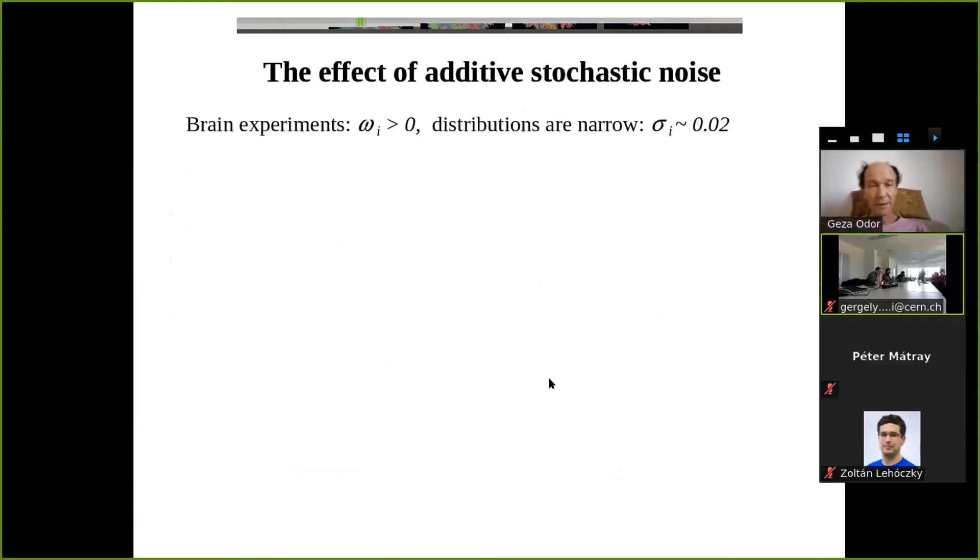He highlighted some points coming from experiments. One of them is that brain experiments are done with omega_i's intrinsic frequencies greater than zero. Of course we don't have rotating things but just oscillating neurons, so omega_i should be greater than zero and also the distributions are very narrow. So we have very low frequency oscillators according to the measurements. The mean value of the omega_i is just 0.05 and the sigma is just 0.02.